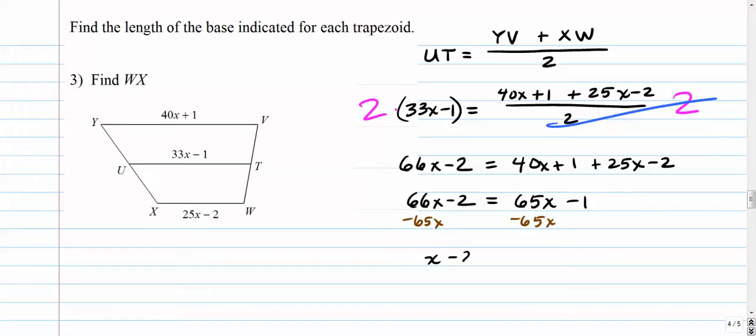66 minus 65 is just 1. We don't write the 1. Minus 2 is equal to... These cancel out. Negative 1. Add 2. Add 2. X is simply just 1. All right, if X is 1, plug it back in here. So the length of segment WX is equal to 25 times 1 minus 2, which is 23.